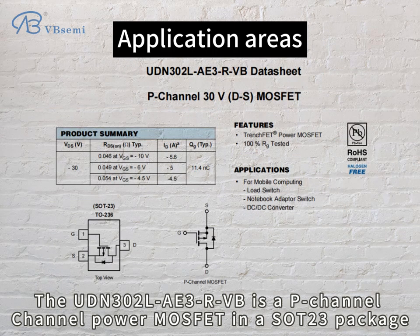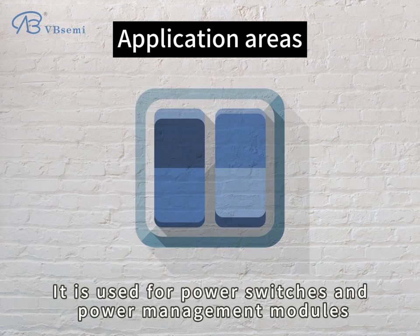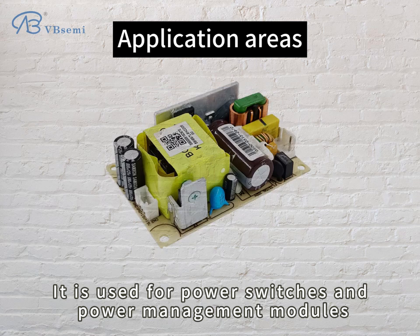The Aden 302 LAE32VB is a P-Channel power MOSFET in a SOT-23 package. It is used for power switches and power management modules.